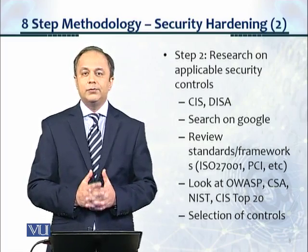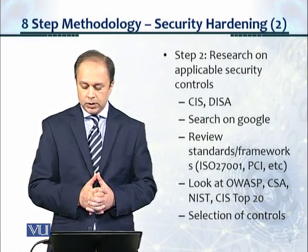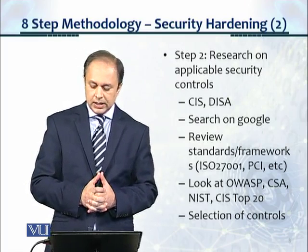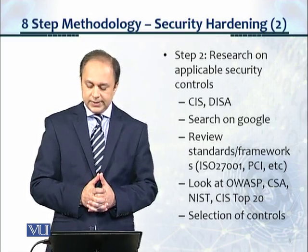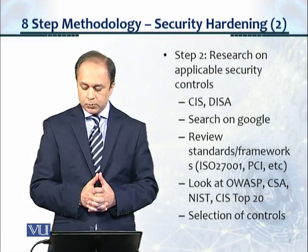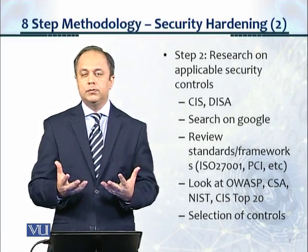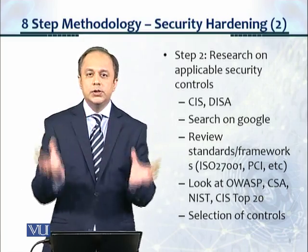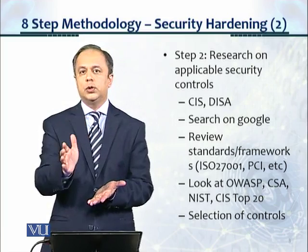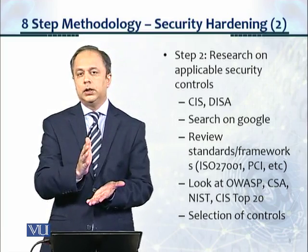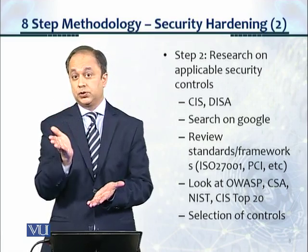Then you search on Google because you have to go through this process. You review the standards in the frameworks: ISO 27001, PCI, OWASP, Cloud Security Reliance, NIST, and the CIS Top 20 Security Controls, and you start making a selection of the controls. You have to know what's out there in controls before you finalize which controls to implement. As a benchmark or standard for the organization, organizations usually pick CIS or DESA.